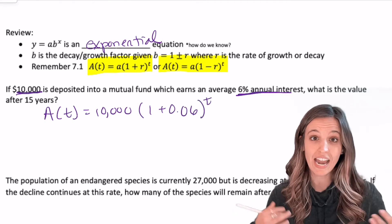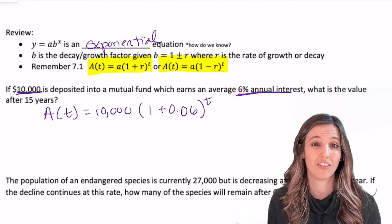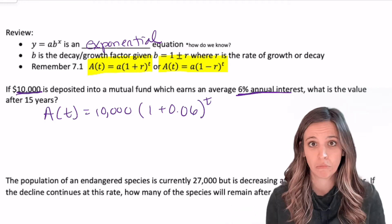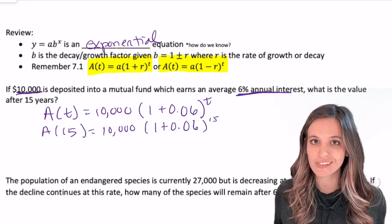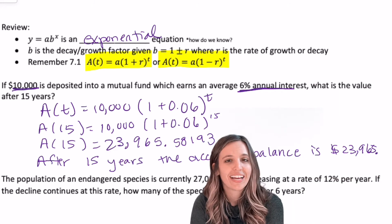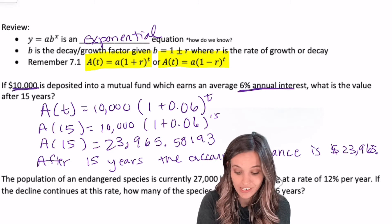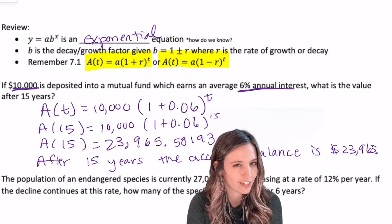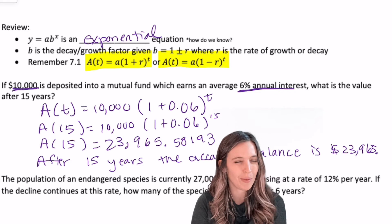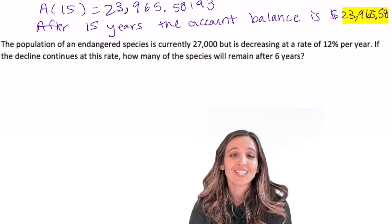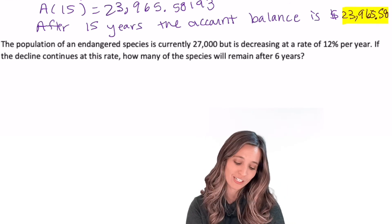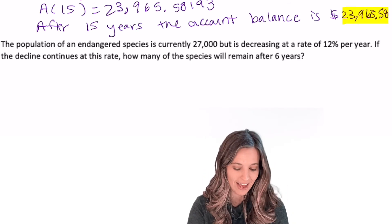Now I want to know how much money is going to be in this account after 15 years. What do we do? Plug in 15. Calculator time. Let's plug this in. After 15 years, the account balance is $23,965. Now looking at the cents here, the bank's not going to give me a single penny more than it's earned. So 58 cents.